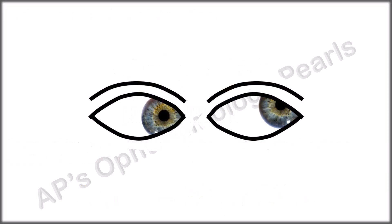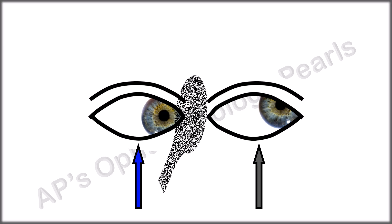When testing for oblique muscle dysfunction, it is important to ensure that the abducting eye is fixing so that the adducting eye, which manifests the oblique muscle dysfunction, can be assessed. Placing an occluder in front of the adducting eye can prevent it from fixating.